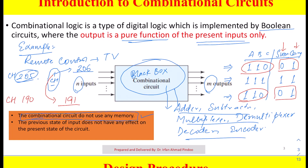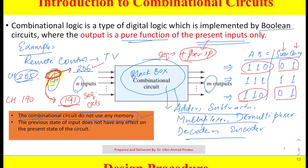Let us note down what we observe: we are using constantly the same button — the plus button — as the input. But in the first case, pressing it gave channel 206, and in the second case the same button pressed gave 191. This is a typical case of sequential circuits. The output depends on the present inputs and also on the previous input being applied — because sequential circuits have a concept of memory.